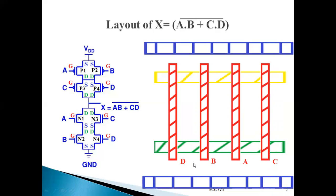If you observe the combination of polysilicon used here, the inputs are ordered as D, B, A, C — not A, B, C, D. There is a reason for this. The combination DBAC forms a closed, complete path with respect to the pull-up network. Similarly, if we observe the bottom pull-down network, D, B, A, C also forms a complete path. Because it forms a continuous complete path for both the pull-up network and pull-down network, we have chosen the combination DBAC. It becomes easier to give connections when we use continuous paths.